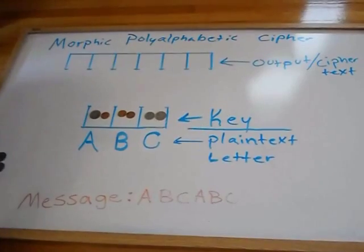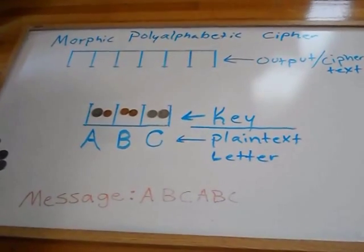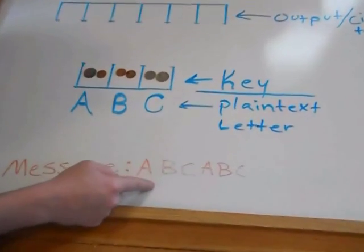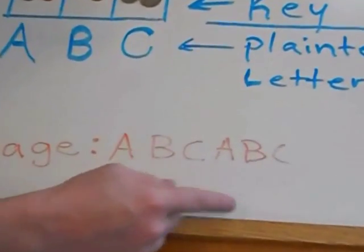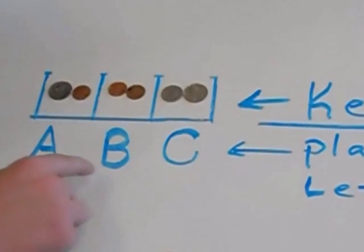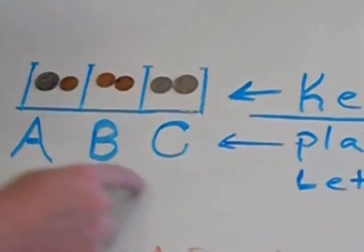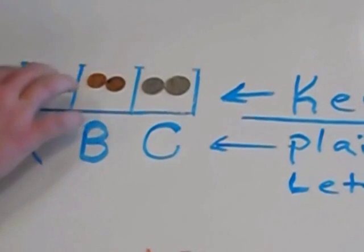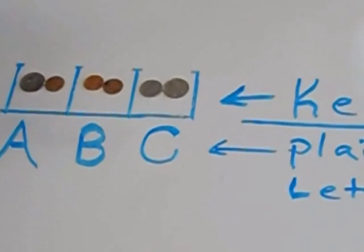This describes the Morphic Polyalphabetic Cipher. We have our plain text message ABC ABC and our key which is three letters A, B, and C, which are represented by nickels, quarters, and pennies.